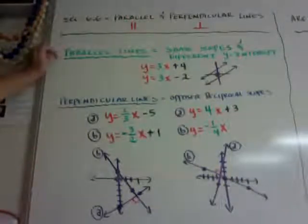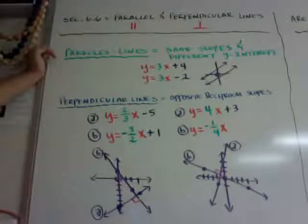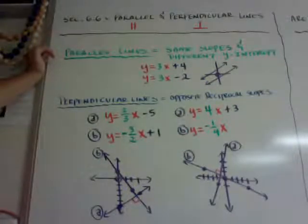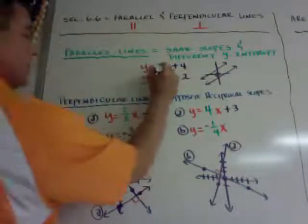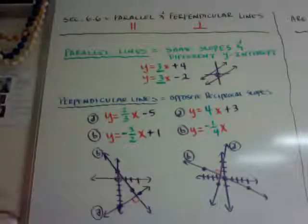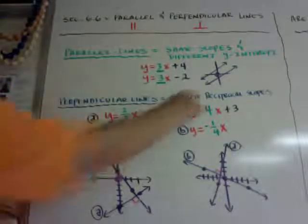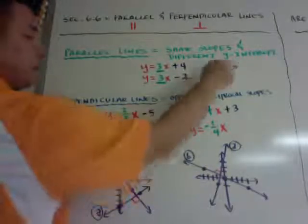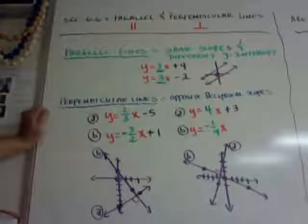For definition, parallel lines have the same slope but different y-intercepts. If they had the same y-intercept it would be the exact same line. So if they have the same slope — for example, 3 and 3 — and different y-intercepts, such as 4 and negative 2, it would look something like this. You can see they have the same slope and therefore they are going to be parallel.